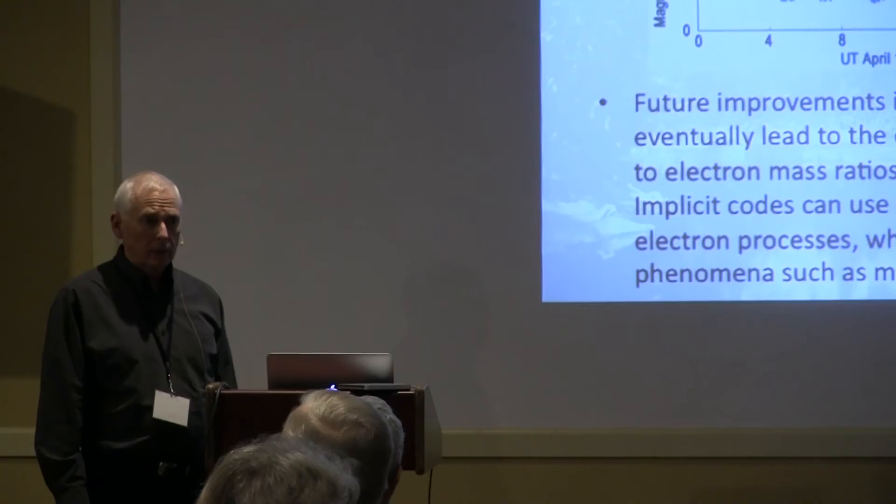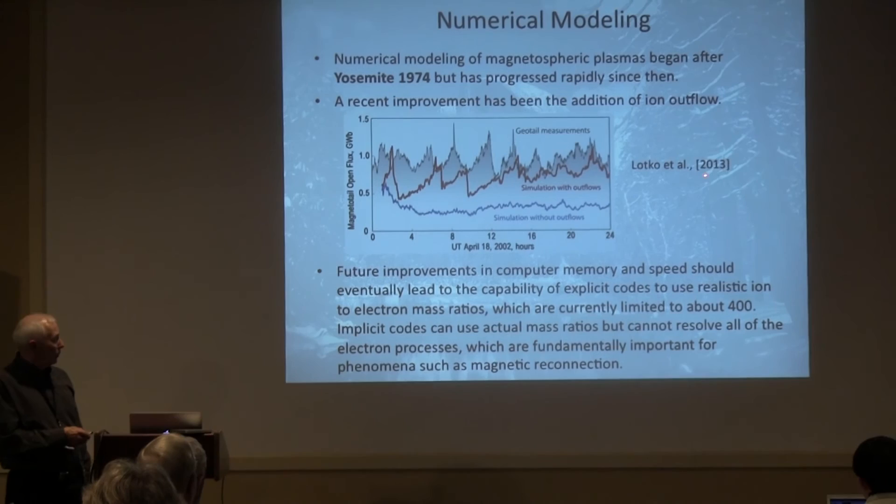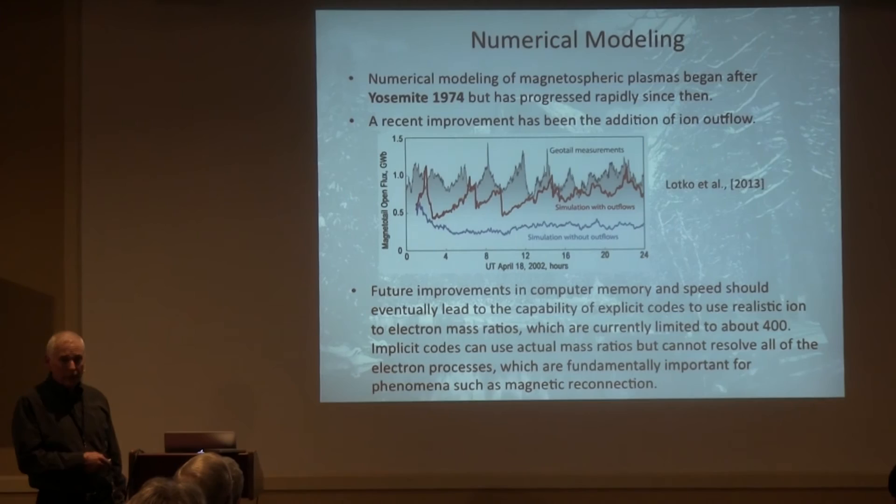Now I'll talk about the future a little bit. Numerical modeling started after Yosemite '74 — I was a little skeptical at first, but now it's a really big activity in our field. One of the things that's held back global modeling is the lack of an ionospheric component — the same reason that Rick, Peter, and Andy started this meeting. Only recently, in 2013, here's Bill Lotko — here's a sawtooth event. If you don't put in ionospheric outflow, you don't get the sawtooth event; you put it in, and you do. I think this is a major advertisement for putting in ionospheric outflow.